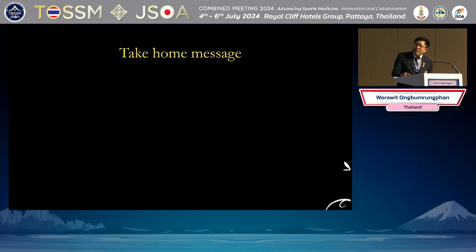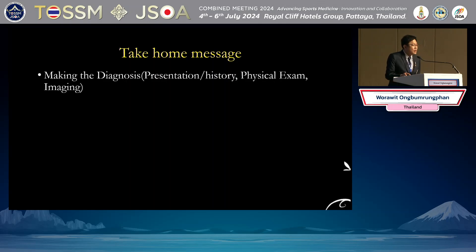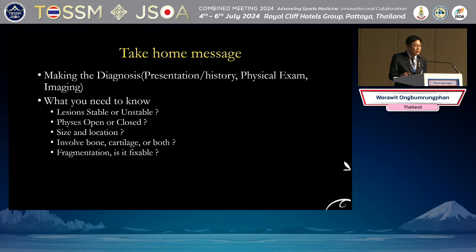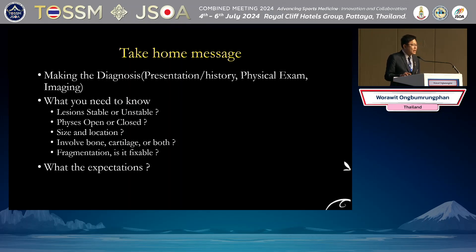The take-home message: making the diagnosis is critically important — you need to know the patient's presentation history, perform physical examination, and obtain imaging. Multiple factors determine treatment: Is the lesion stable or unstable? Is the physis open or closed, as there is potential for healing with an open physis? You need to know the size and location — whether it involves bone, cartilage, or both — and whether the fragment is fixable. Finally, discuss expectations with your patient and their family, agree on the goal of treatment, and make the best treatment option together. Thank you.